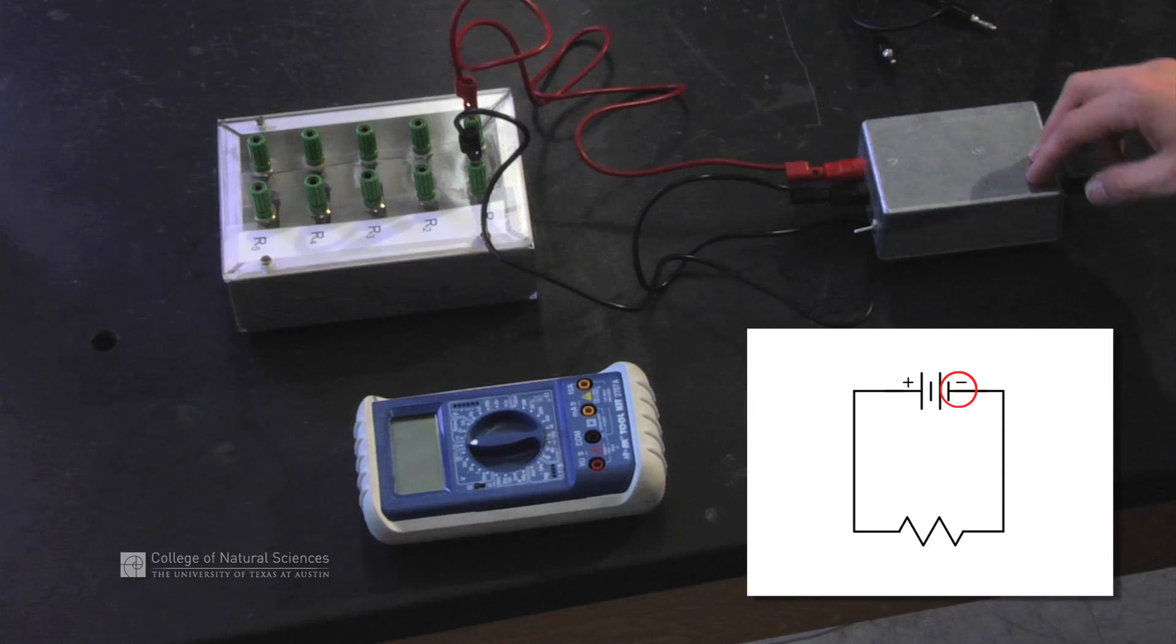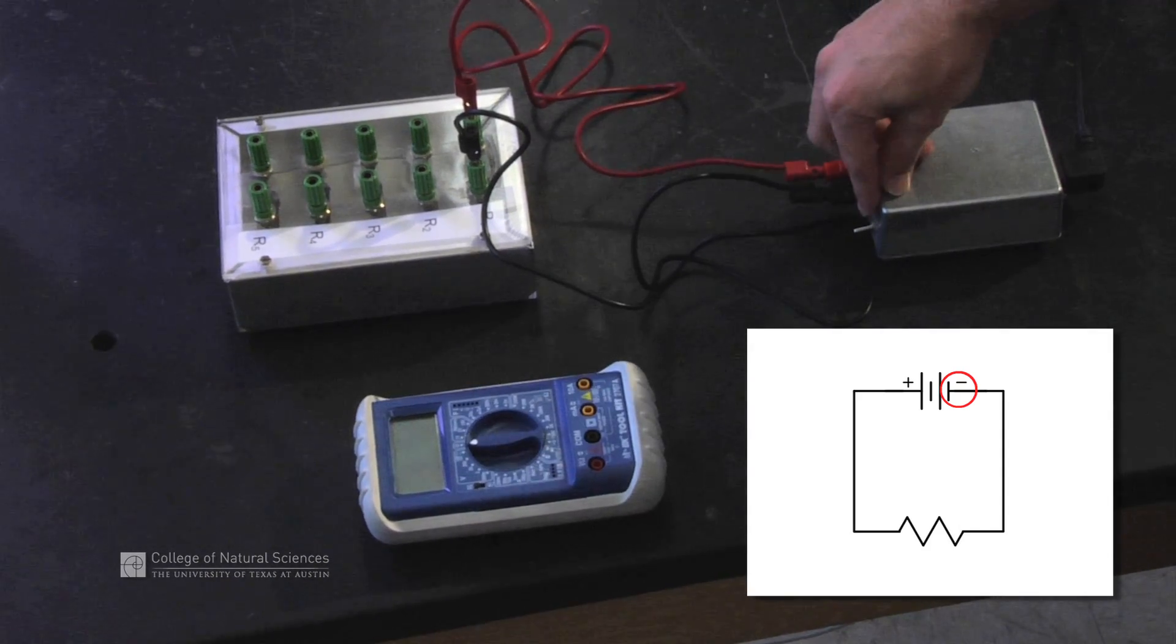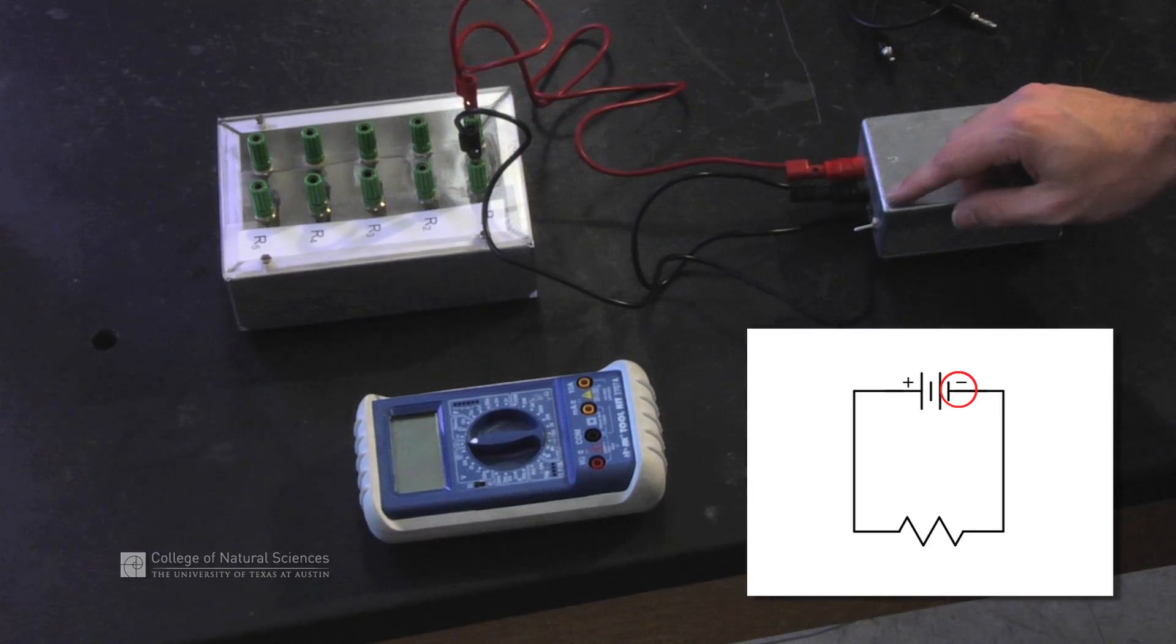As we can see, our circuit is set up with a simple resistor and voltage supply, and the voltage supply is still turned off. We don't want to turn it on yet.